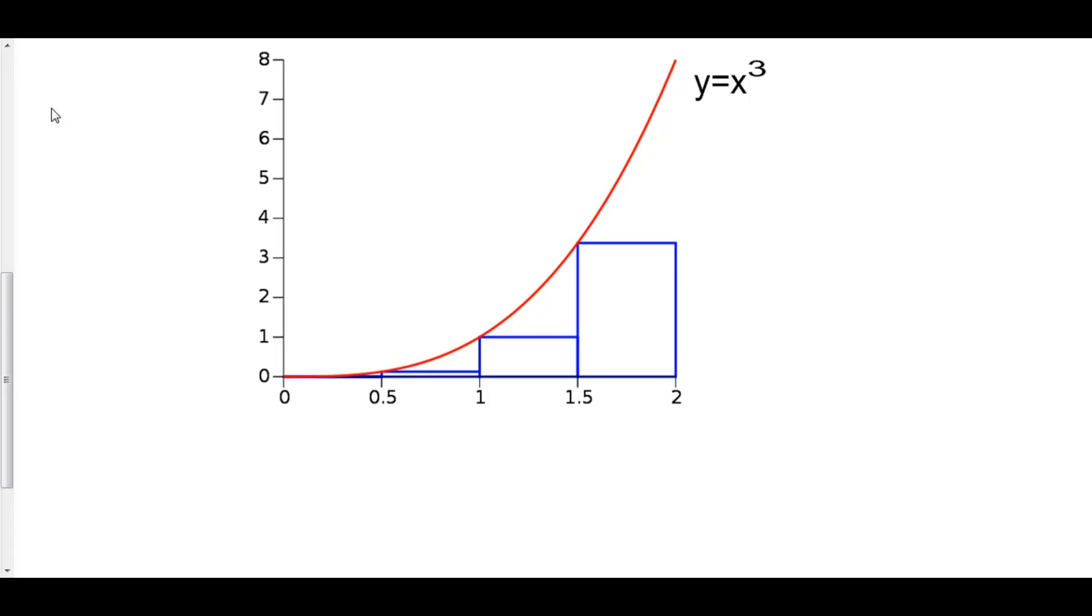What are we going to do with the area now? Our common h, or the width of our rectangles, is 0.5, so we can factor that out of the sum of the area of our rectangles.